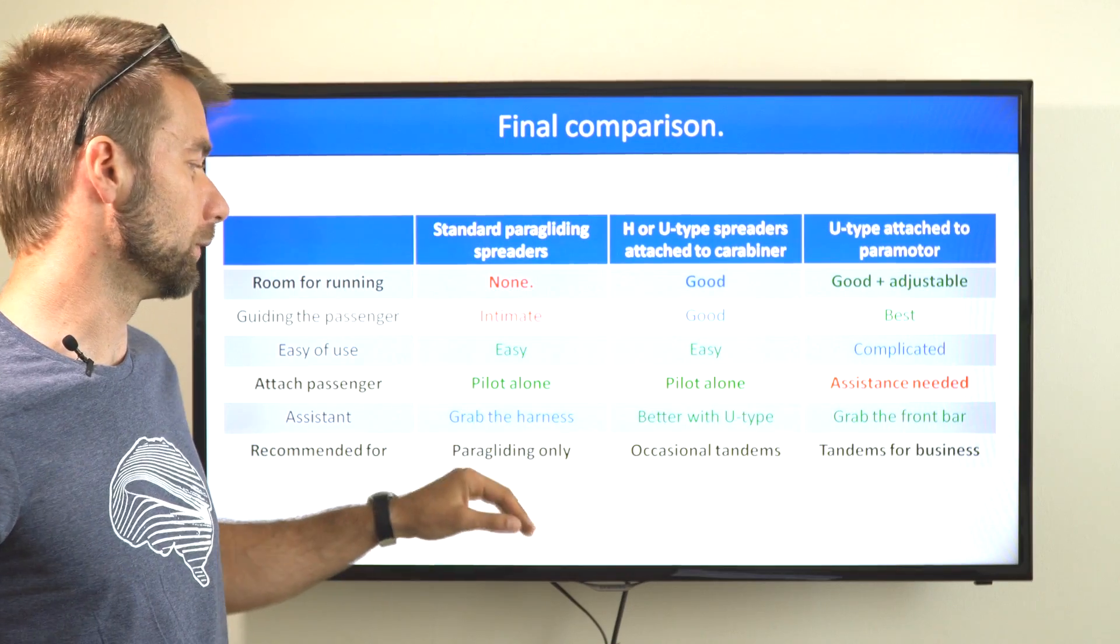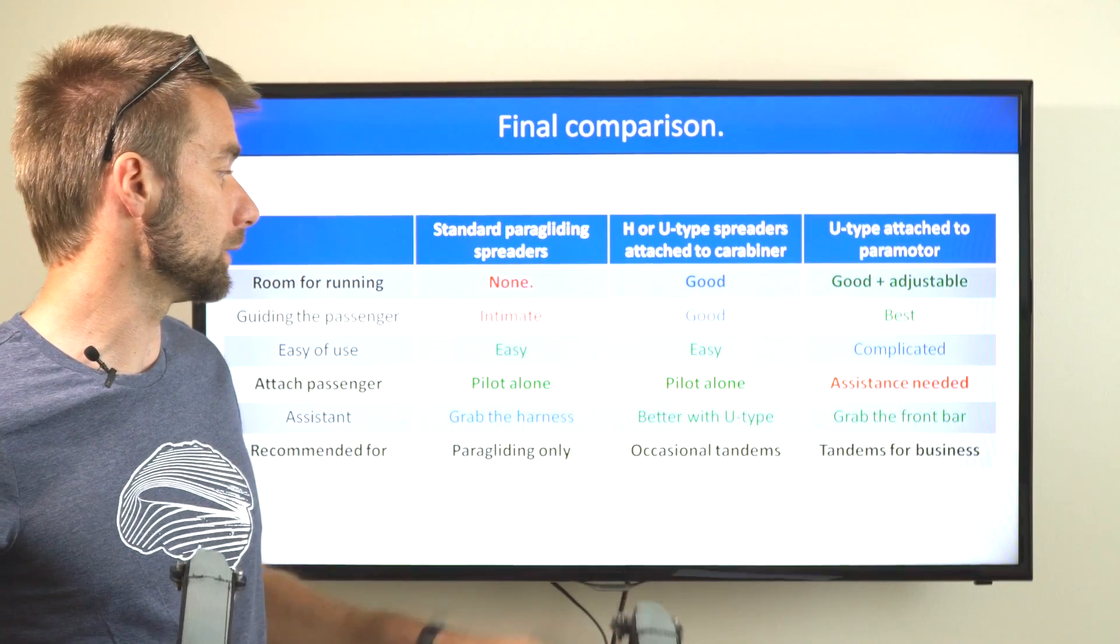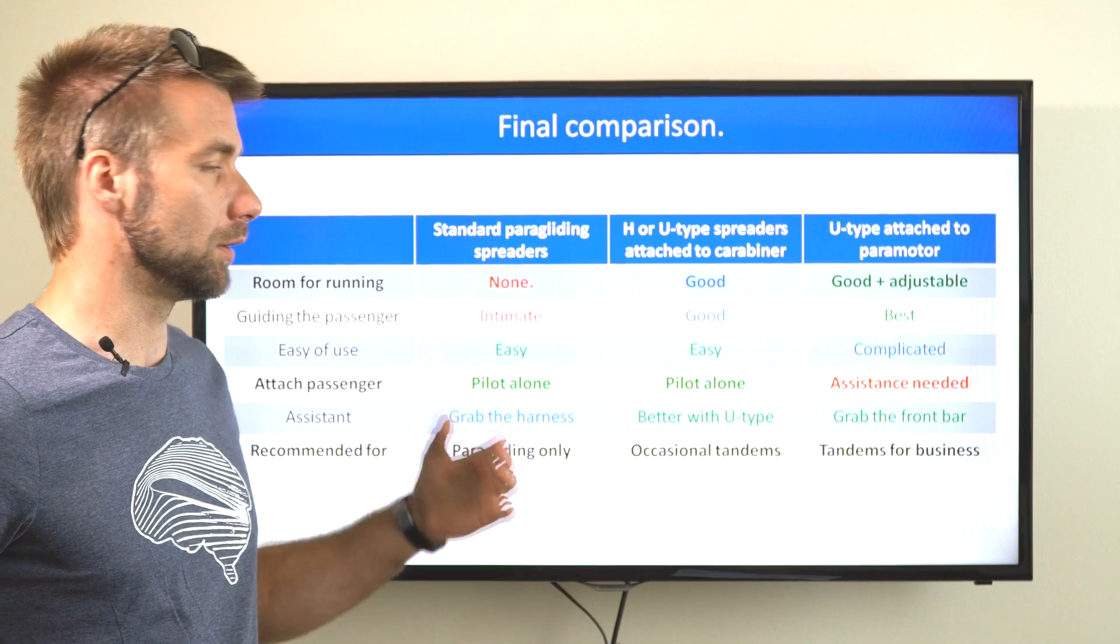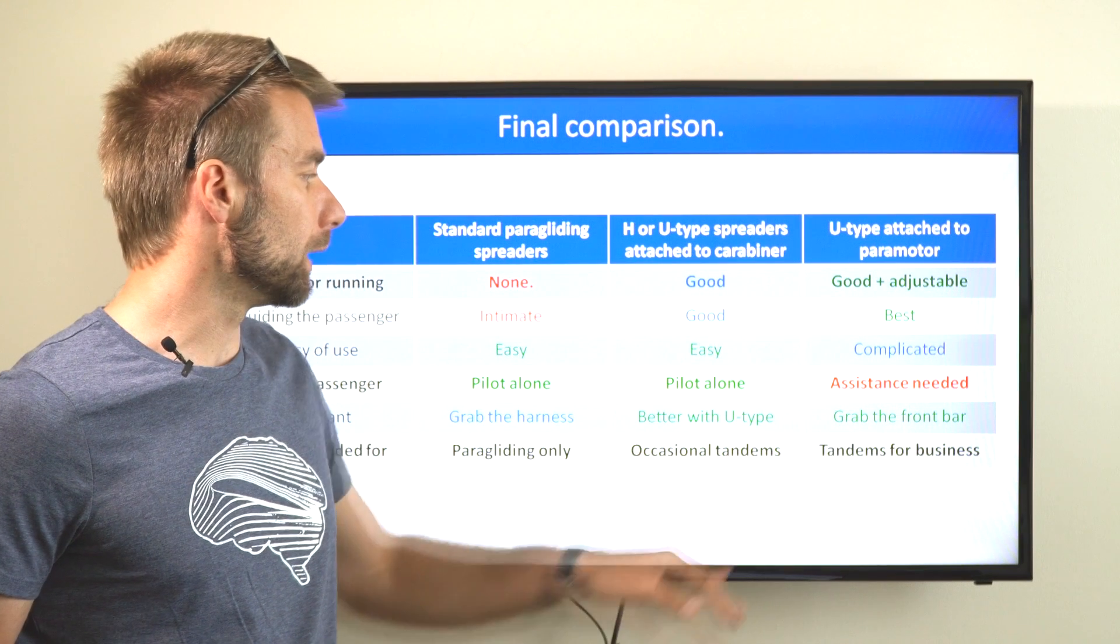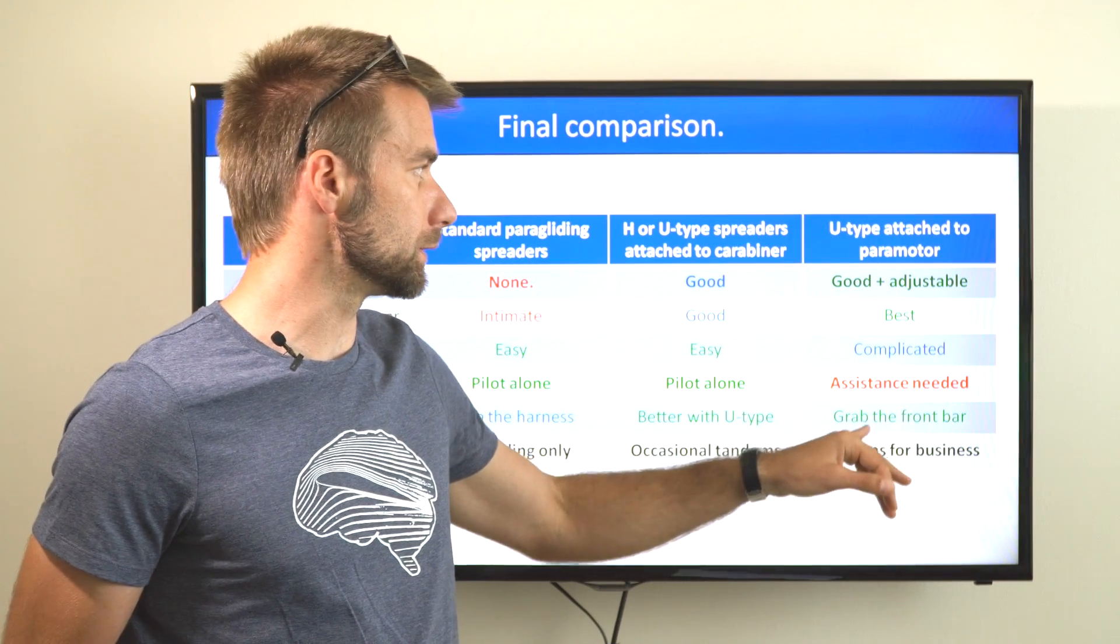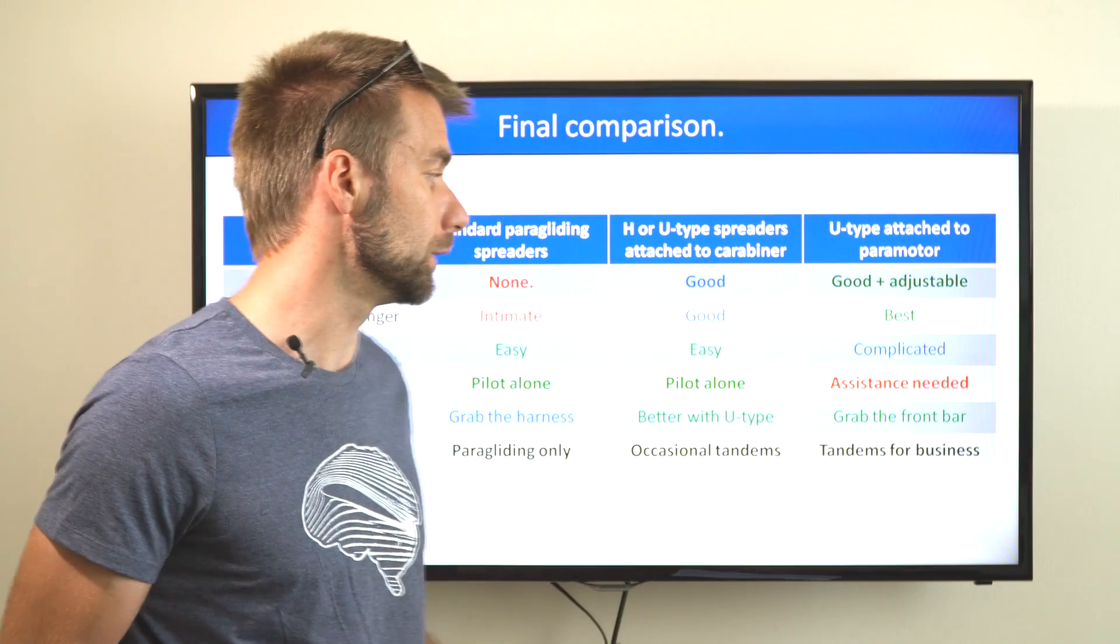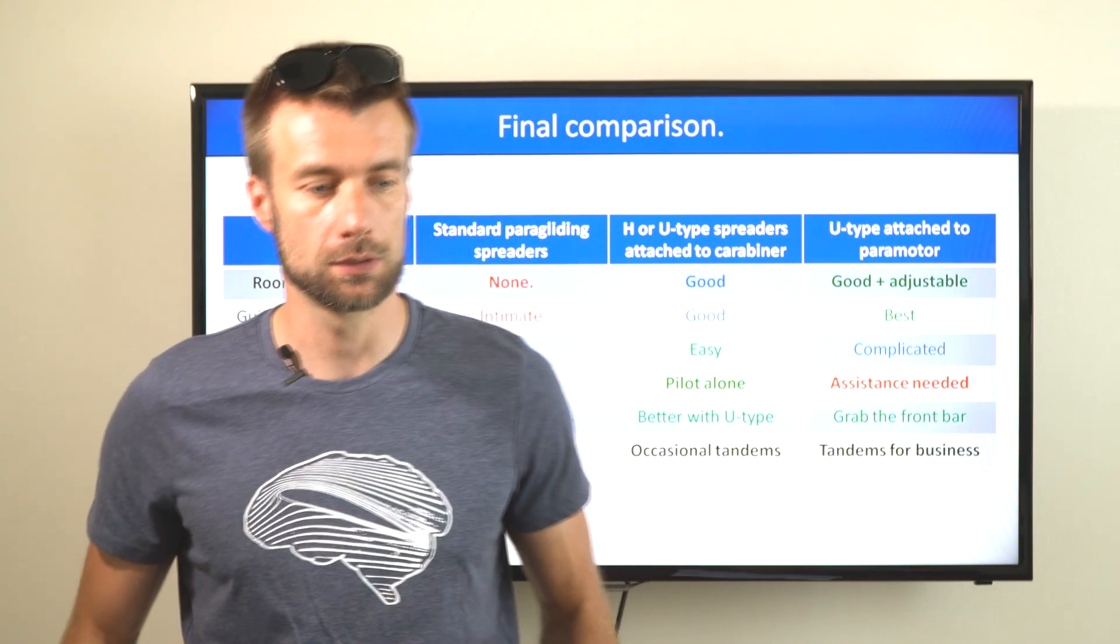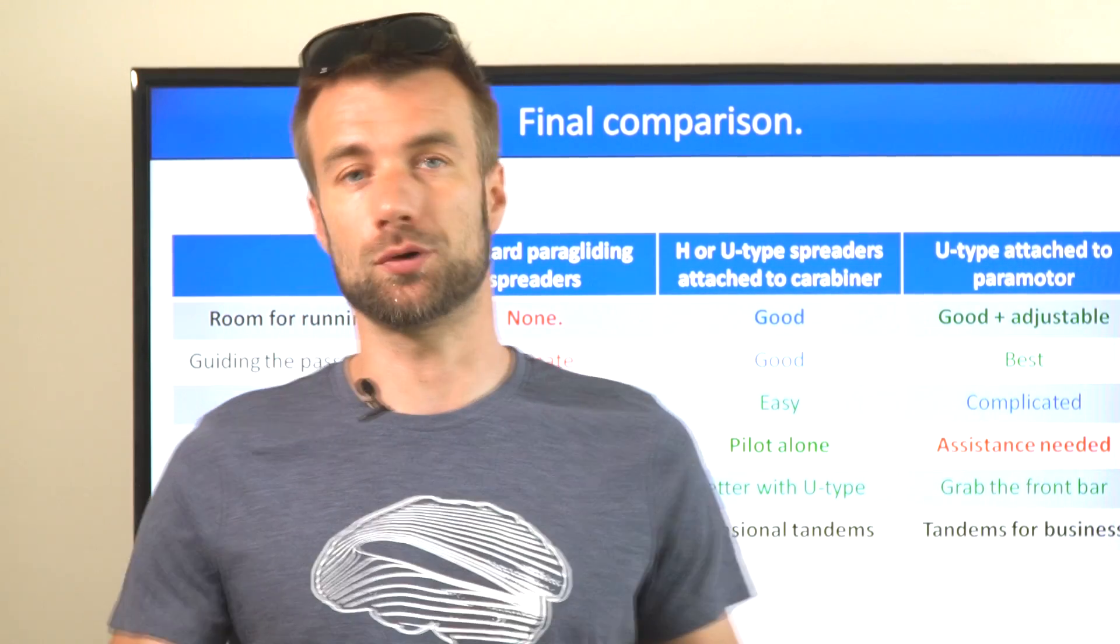Final conclusion: standard paragliding spreaders only for paragliding. H or U-shaped spreaders that are connected directly into the carabiners are best for occasional tandems, especially if the passenger is already used to doing tandem flights. I would recommend U-type spreaders that are attached to the frame of the paramotor for tandems for business because you have the best launch characteristics, but you need an assistant for strapping in. I can only encourage you to share the fun and joy of this sport with others. Go for tandem flights.